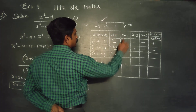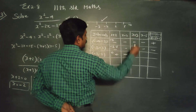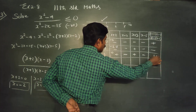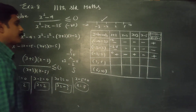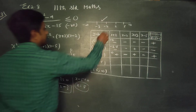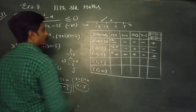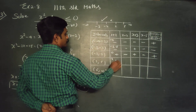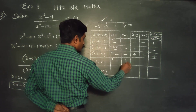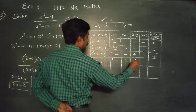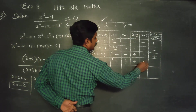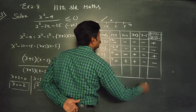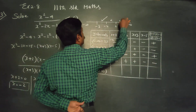For the interval minus 2 to 2, the test point is 0. Zero plus 2 is positive, 0 minus 2 is negative, 0 plus 3 is positive, 0 minus 5 is negative. The result is positive, so this interval is not allowed. For 2 to 5, test point 3: 3 plus 2 positive, 3 minus 2 positive, 3 plus 3 positive, 3 minus 5 negative — result is negative, so this interval is allowed.